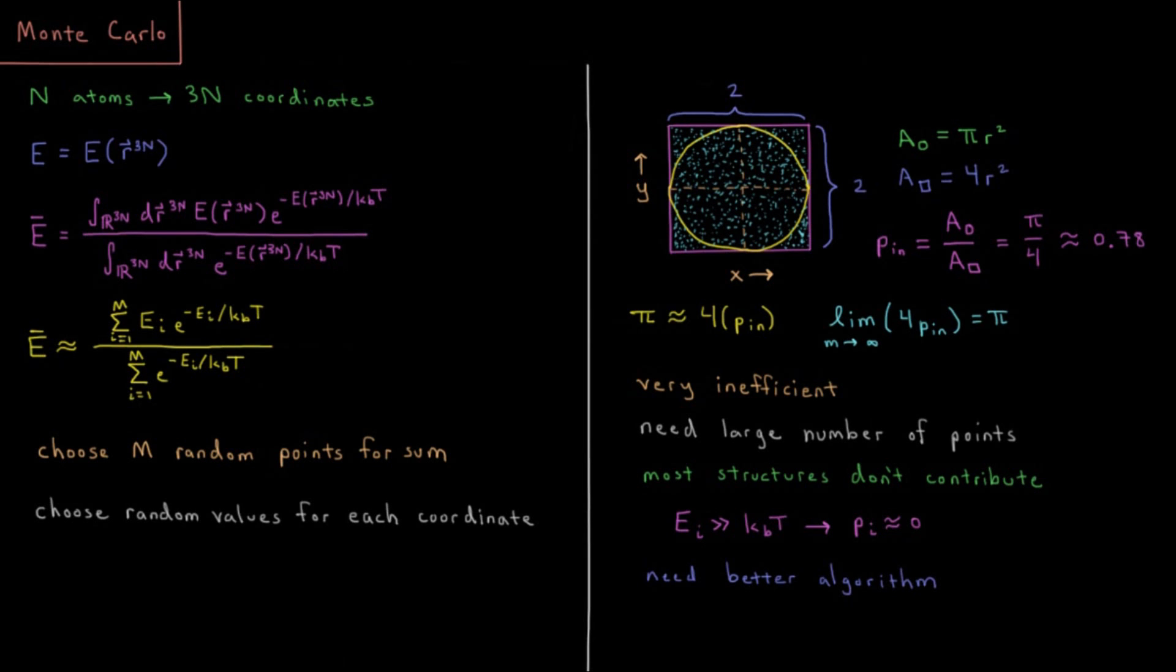This video will discuss the basics of Monte Carlo approximations to mathematical quantities. In general, we have a system of N atoms as we typically do in computational chemistry. Each of those has an XYZ coordinate, as we are fond of mentioning here. So we have 3N total coordinates.